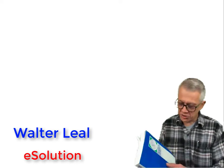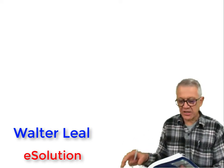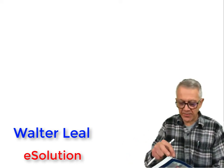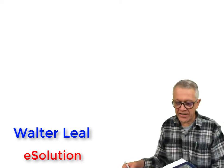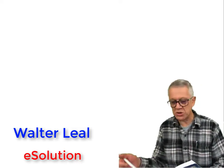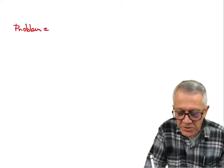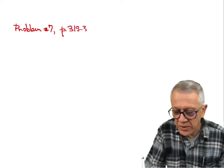Let's have the solution now for problem 7 in Seagull's biochemical calculation. It starts on page 319 and goes over to page 320. This is problem number 7, and you can find it on pages 319 and 320.